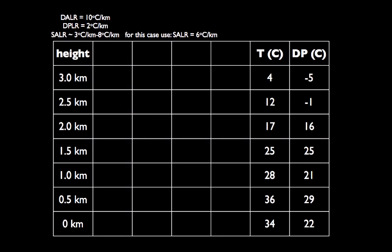We'll start with an example where we have temperature and dew point measurements for many different heights. This would be the result of a weather balloon measuring temperature, dew point, and other things — this is obviously just a small subset.